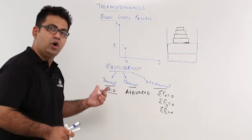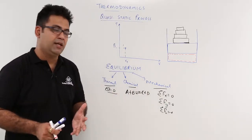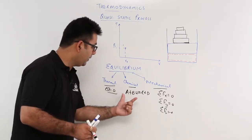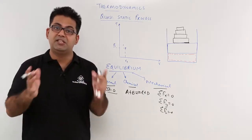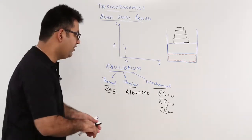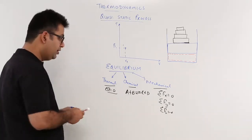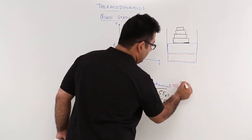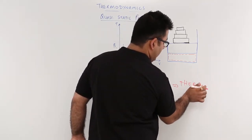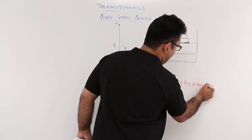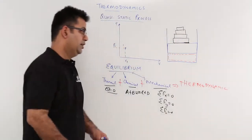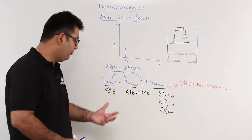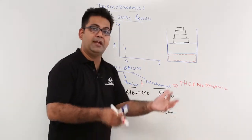When you have all three equilibria coexisting simultaneously — thermal equilibrium, chemical equilibrium, and mechanical equilibrium — then the system is said to be under thermodynamic equilibrium. So thermal plus chemical plus mechanical gives rise to thermodynamic equilibrium. If somebody asks you to define thermodynamic equilibrium, it is the combination or coexistence of thermal, chemical, and mechanical equilibrium.